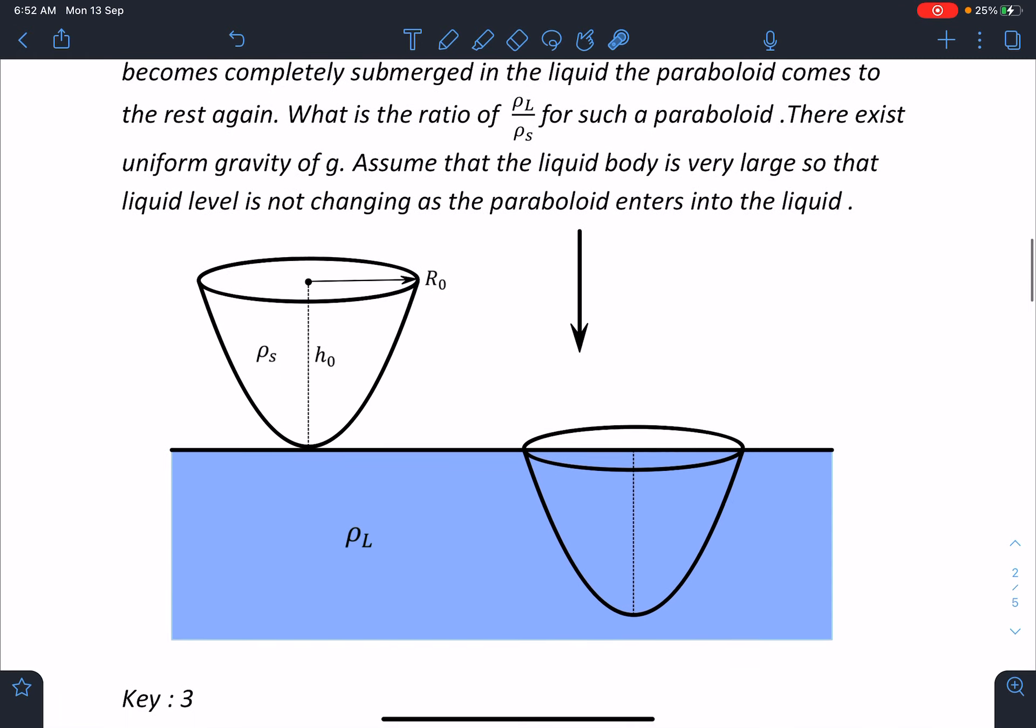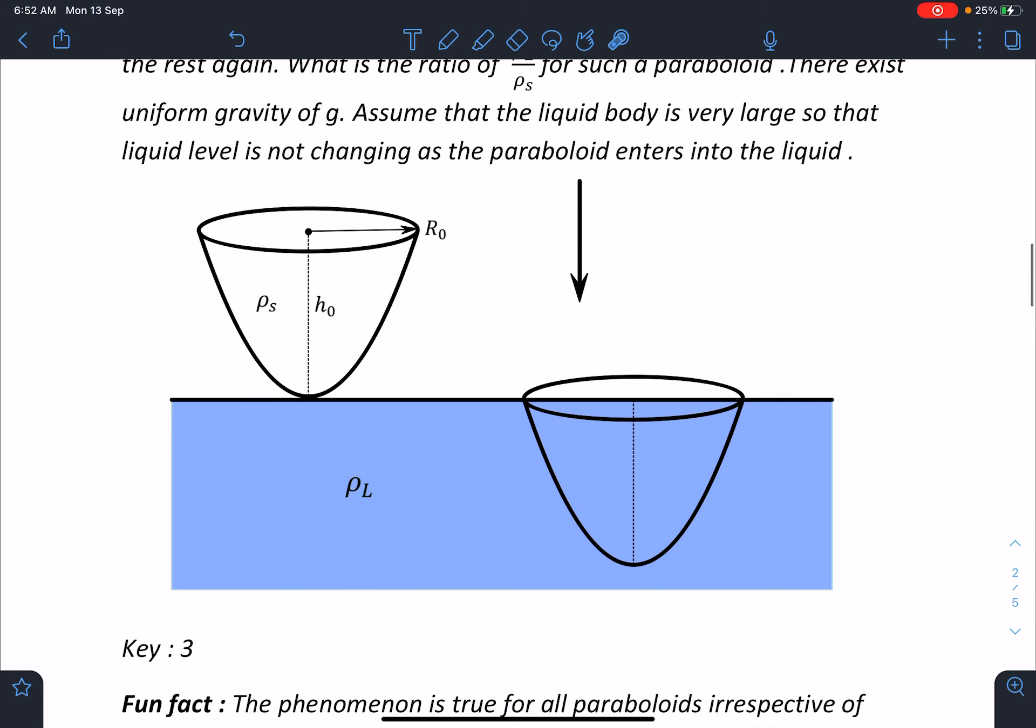And there exists uniform gravity of g. Assume that the liquid body is very large so that liquid level is not changing as the paraboloid enters into the liquid.